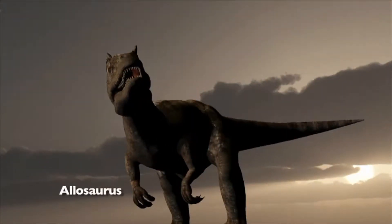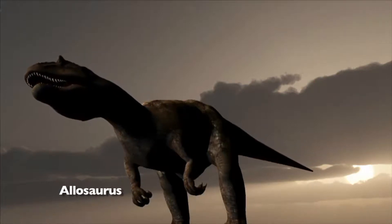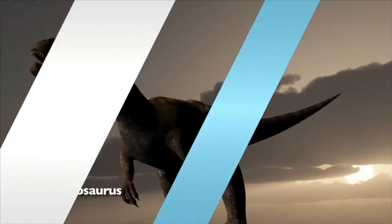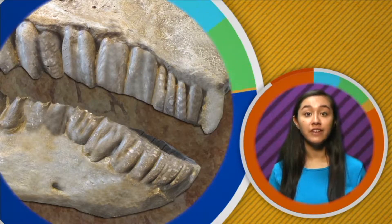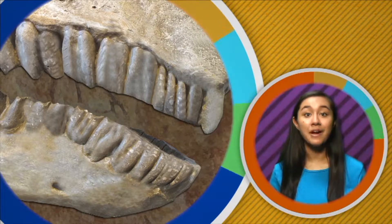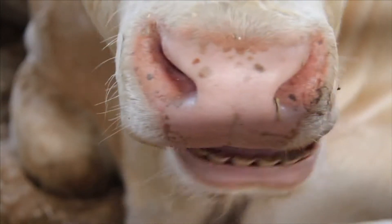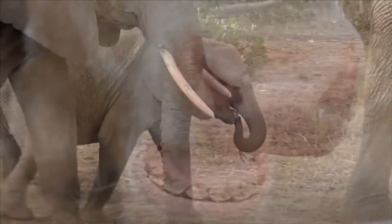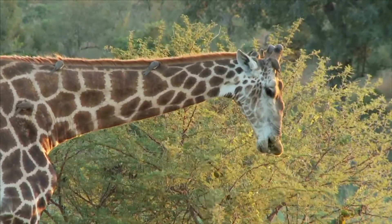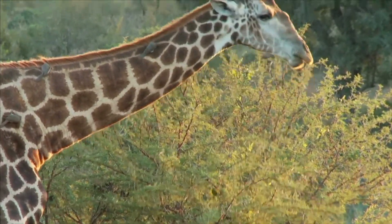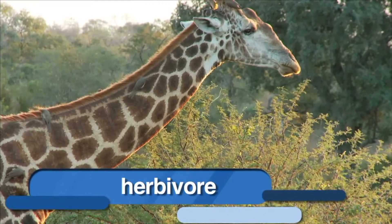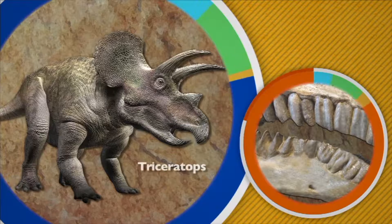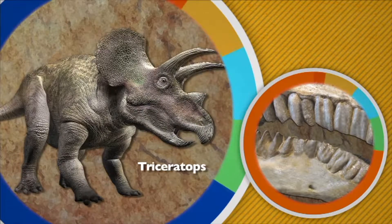Allosaurus, a fierce predator, is an example of a carnivore — notice its sharp pointy teeth. Paleontologists have also found dinosaur fossil teeth that are round and flat. Today, animals with flat round teeth like cows, elephants, and giraffes are plant eaters. Plant eaters are known as herbivores. So it makes sense that a dinosaur with flat round teeth like Triceratops ate only plants too.